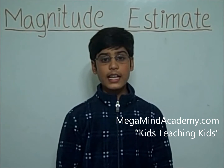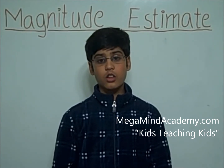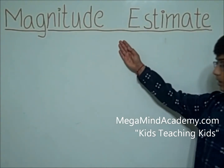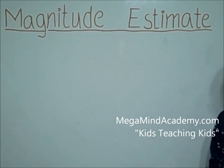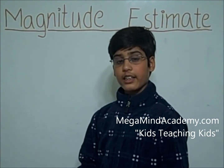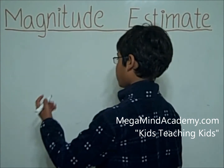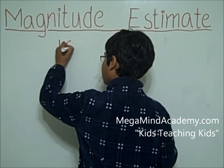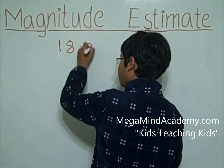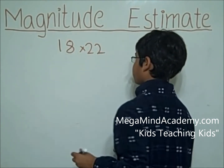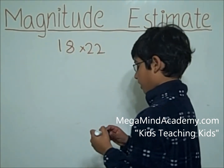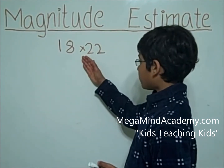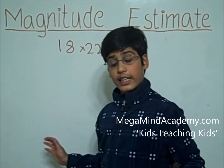Now, let's look at an example of a magnitude estimate. Let's say our question is 18 times 22. We're going to round both of these numbers to the nearest tens.